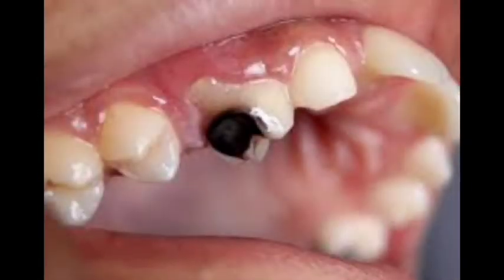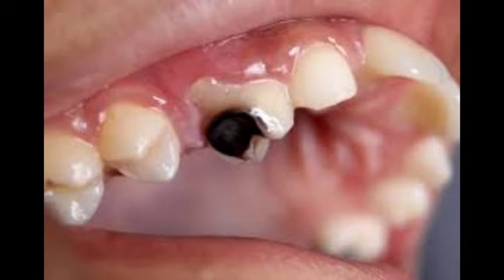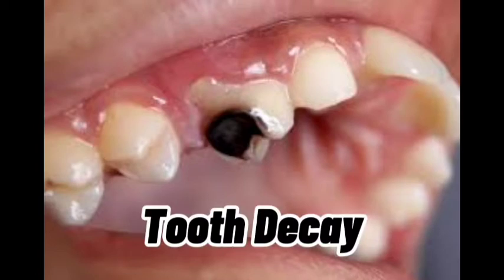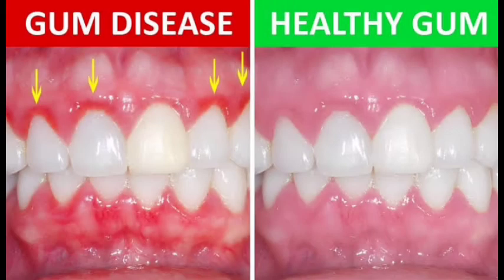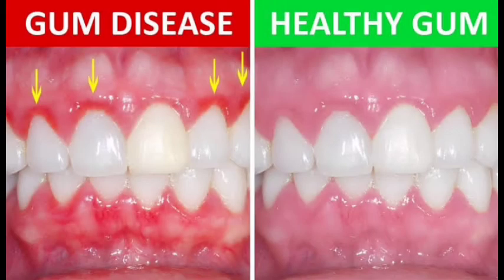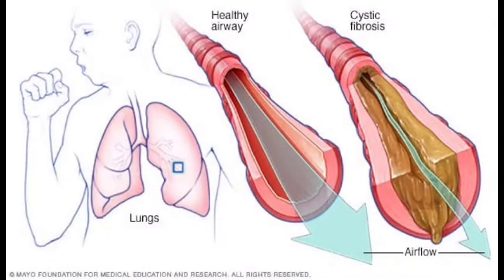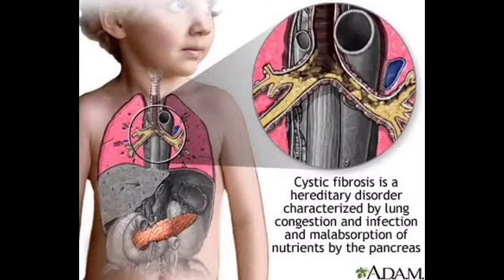Biofilms can form on the teeth of most animals as dental plaque, causing tooth decay and gum disease. Biofilms can also cause cystic fibrosis, a hereditary disorder characterized by lung congestion, infection, and malabsorption of nutrients by the pancreas.